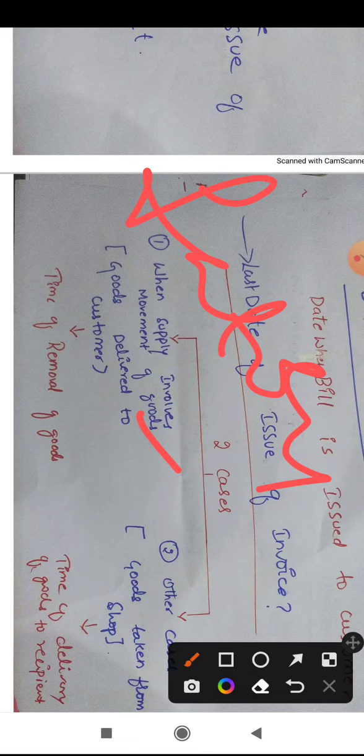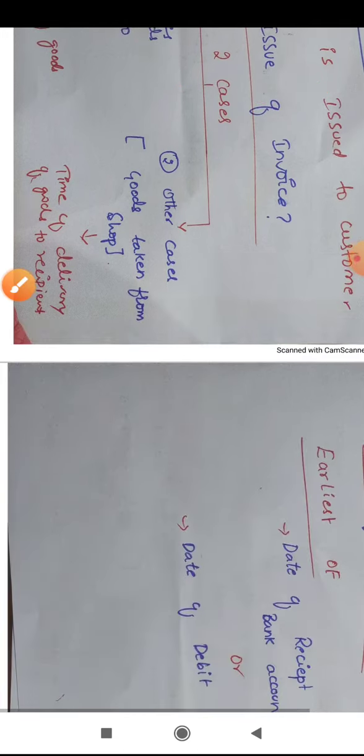The second case is when the goods are taken from the shop by the receiver himself — that is, the time of delivery of goods. When the person physically visits the shop or factory and takes the goods, the last date of issue of invoice will be the time of delivery. So: if goods are moved by the seller, it is the time of removal; if the receiver collects them, it is the time of delivery.